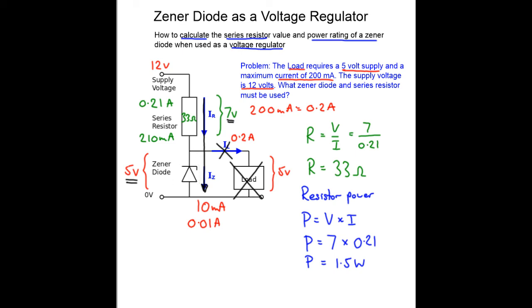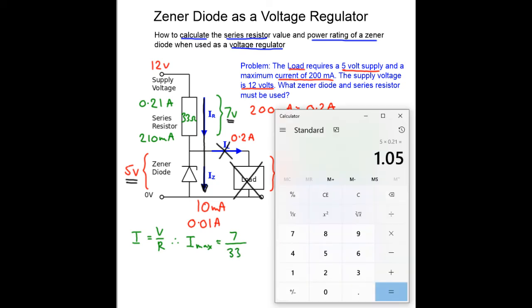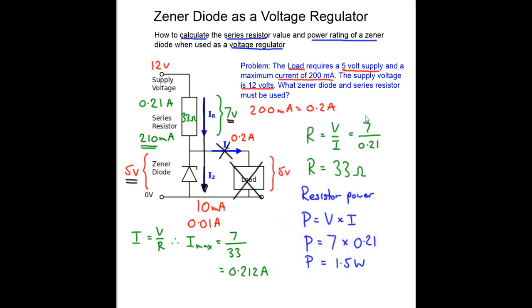For the resistor we now use the resistor equation I equals V over R. Therefore I maximum for the Zener diode equals V which is 7 volts across the resistor divided by the resistance which is 33 ohms. 7 divided by 33 equals 212 milliamps, 0.212 amps. Slightly more than our 210 milliamps up here because we rounded down the value of resistor to 33 ohms, so that's why it's not 210 milliamps.